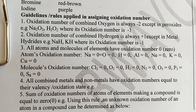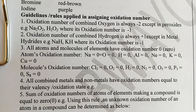Rule number two: the oxidation number of combined hydrogen is always positive one, except in metal hydrides — that is, a metal combined with hydrogen. In a metal hydride, hydrogen is negative one. But in any other compound where hydrogen is combined with another element, the oxidation number of hydrogen is always positive one. So remember: hydrogen is always positive one, oxygen always negative two, except in those special cases.